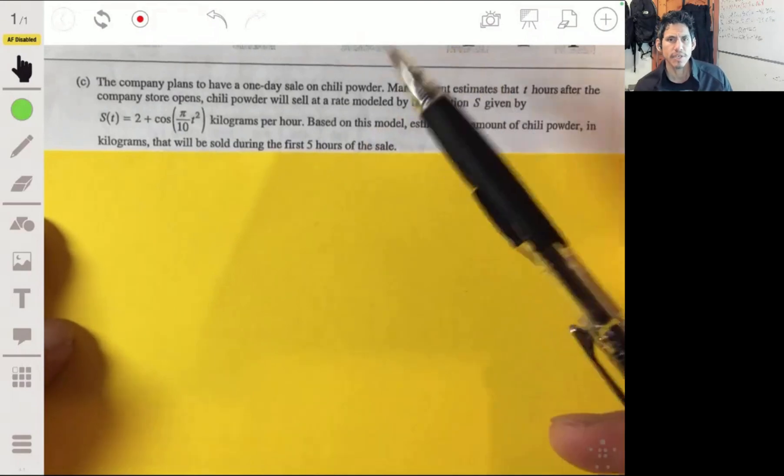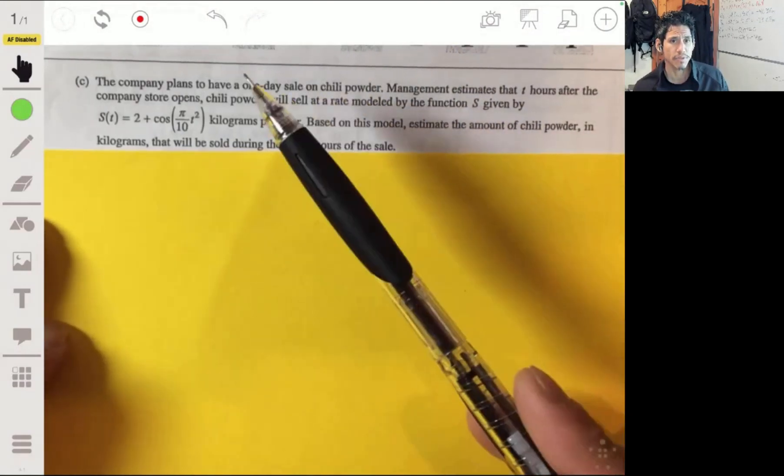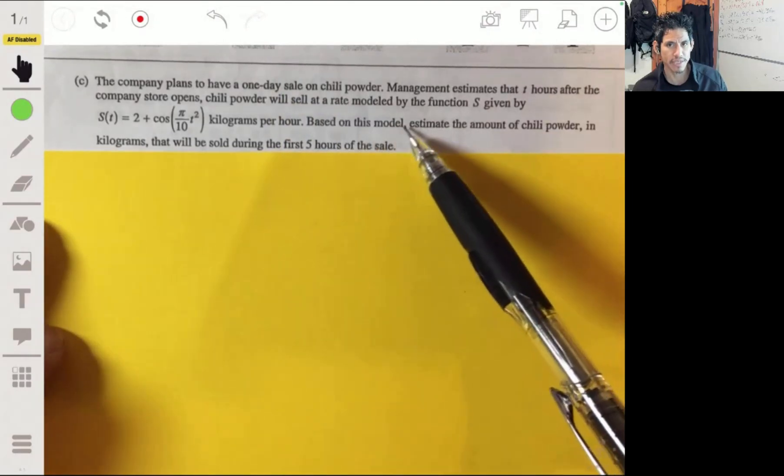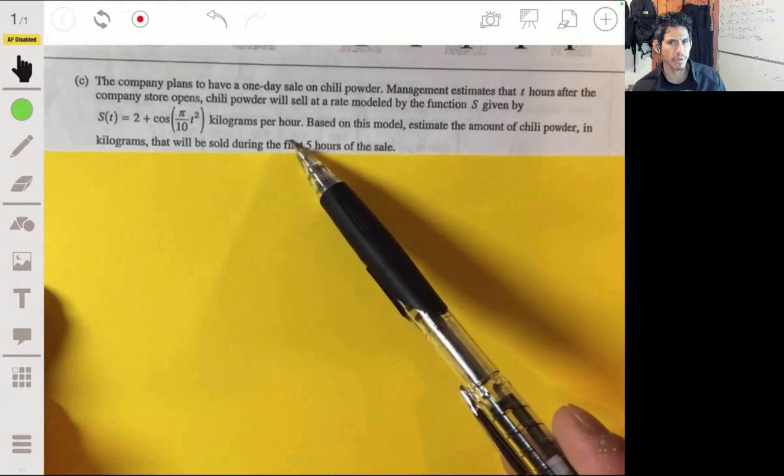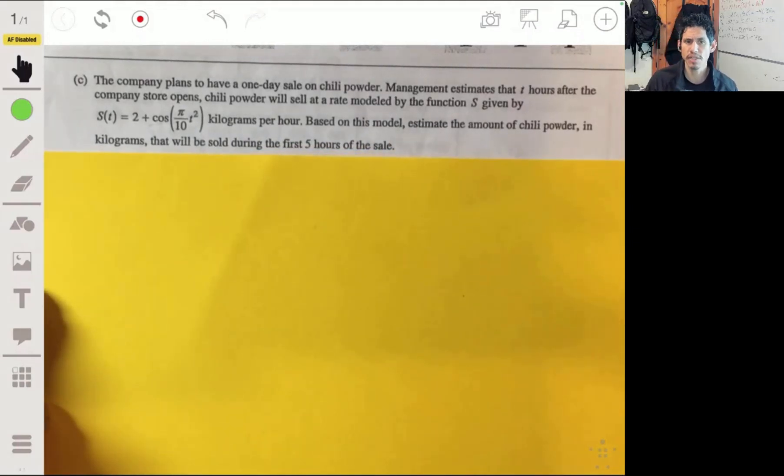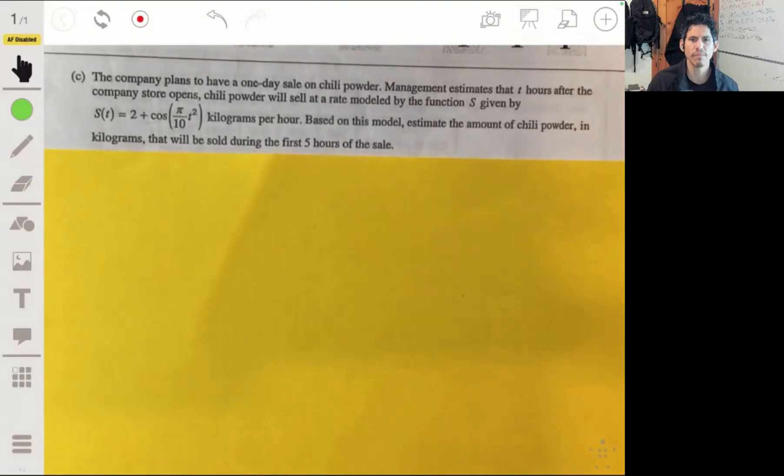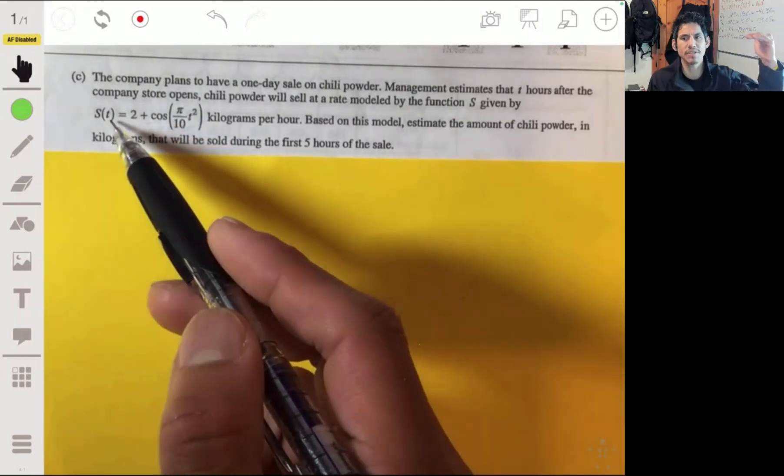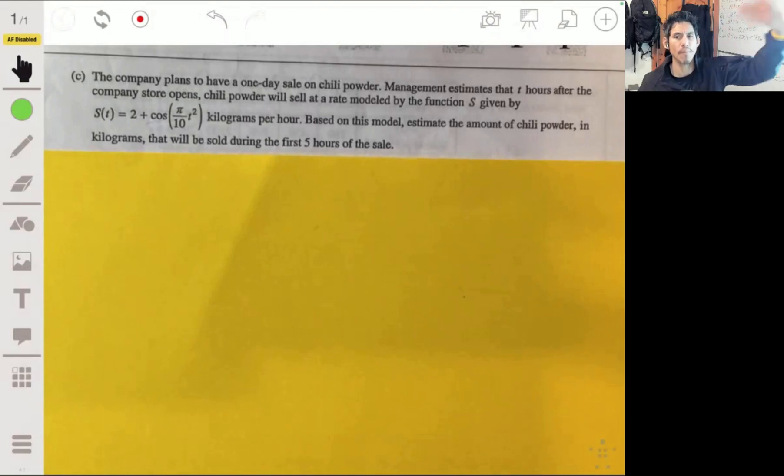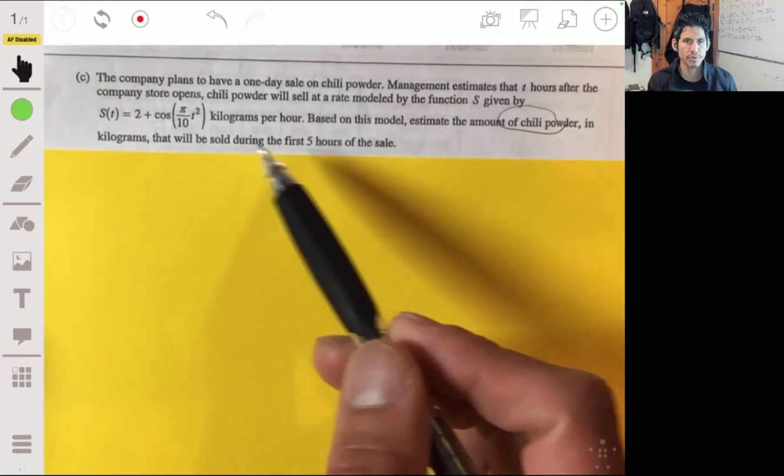The company plans to have a one-day sale on chili powder. Management estimates that T hours after the company store opens, chili powder will sell at a rate modeled by the function S given by S(T) = 2 + cos(π/10 T²) kilograms per hour. Based on this model, estimate the amount of chili powder that will be sold during the first five hours of sale.